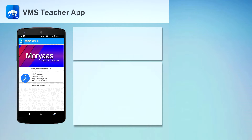This is your first screen. Select the branch by clicking its name. If you are managing more than one branch, both would be shown here.